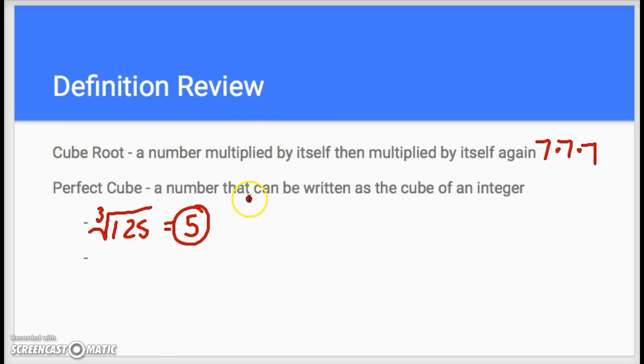If you were to take another one, let's say the cube root of eight, that's going to give you two because two times two times two equals eight. So these are both examples of perfect cubes.